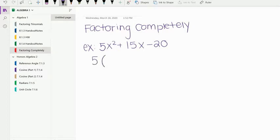then you can think of it as 5 times what would give us 5x squared? I would have x squared left. 5 times what would give us 15x? It would be 3x. And 5 times what would give us negative 20? It would be negative 4.